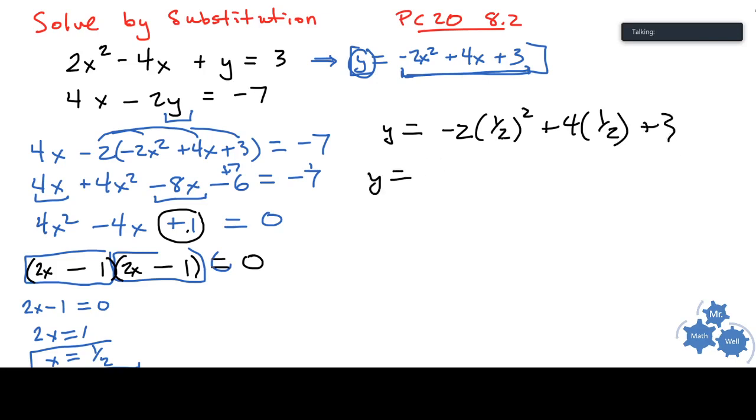And so what does that equal, well, that's going to be one quarter times negative two, that's going to be negative two over four, or negative one half. Four times one half is two. And so this is what we have, we have five, we have four and a half, right, two plus three is five minus a half, that's four and a half, or, what's that, nine over two.